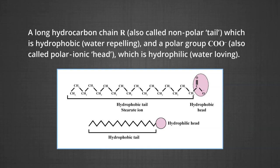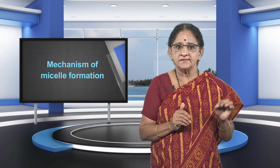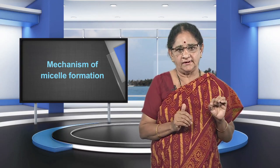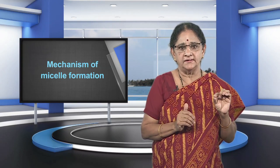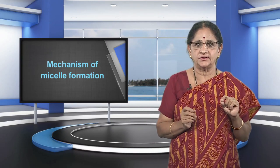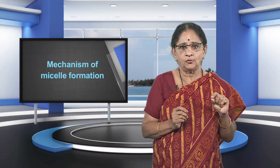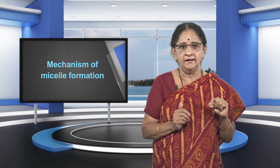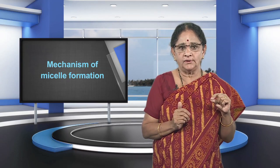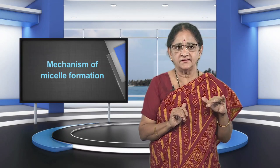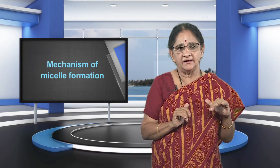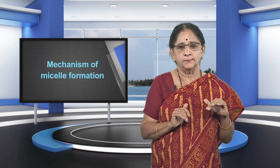The RCOO⁻ ions consist of two parts: a long hydrocarbon chain R, also called the non-polar tail, which is hydrophobic (water repelling), and a polar group COO⁻, also called the polar ionic head, which is hydrophilic. The RCOO⁻ ions are therefore present on the surface with the carboxylate in water and the hydrocarbon chains staying away from it. But at the critical micelle concentration, the anions are pulled into the bulk of the solution and aggregate to form a spherical shape with the hydrocarbon chains pointing towards the center and the carboxylate part remaining outward on the surface. An aggregate thus formed is known as an ionic micelle, which may contain as many as 100 such ions.